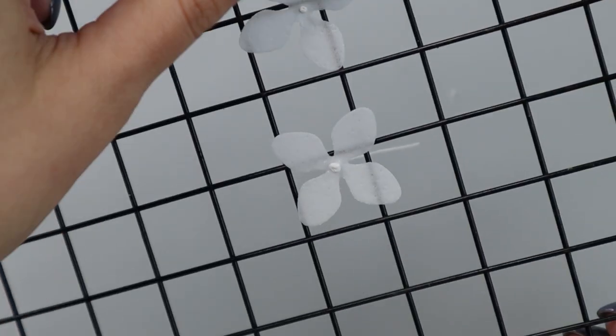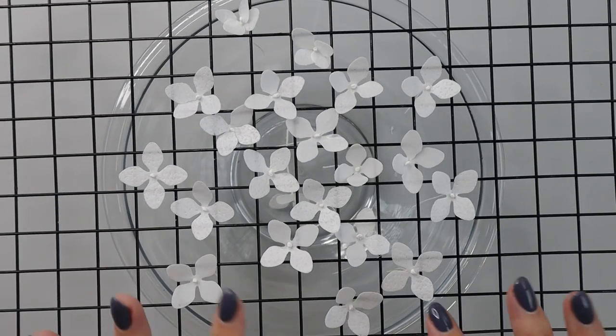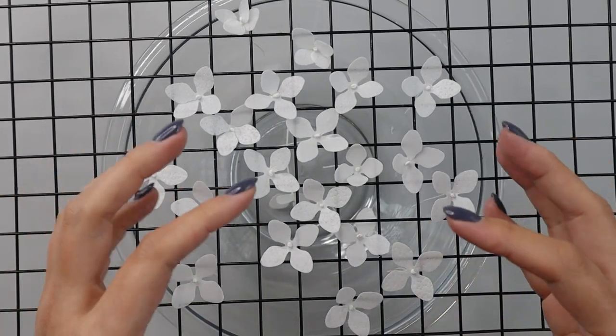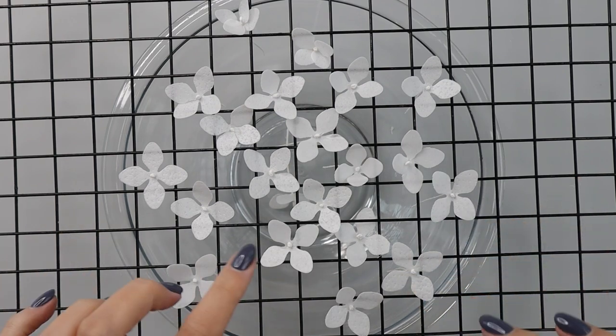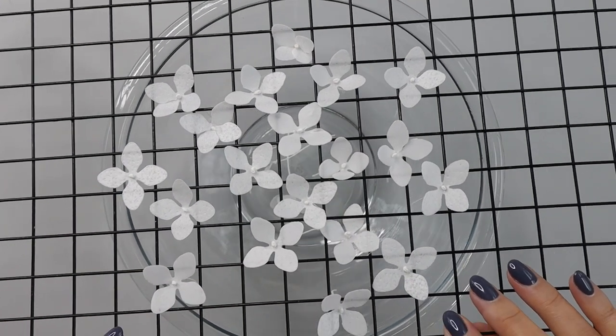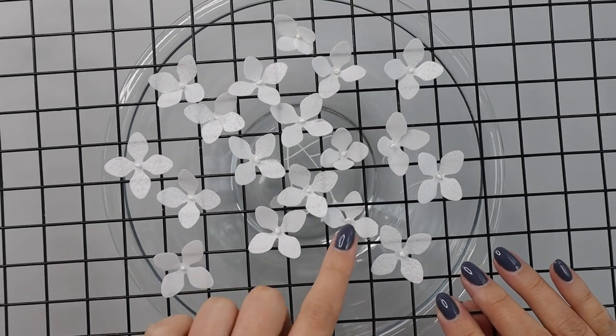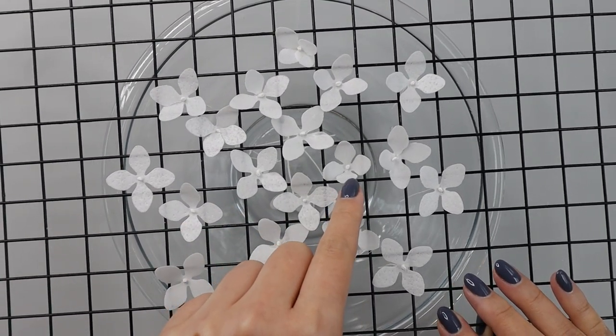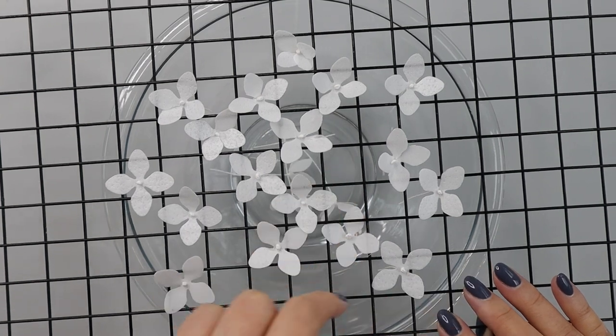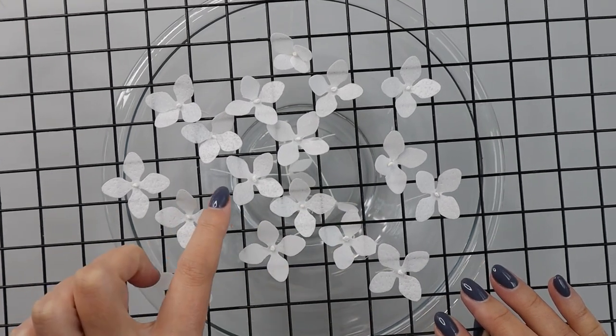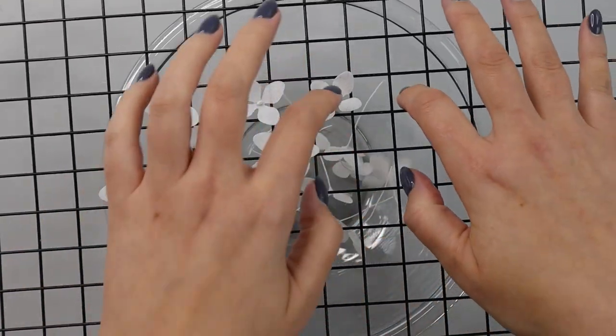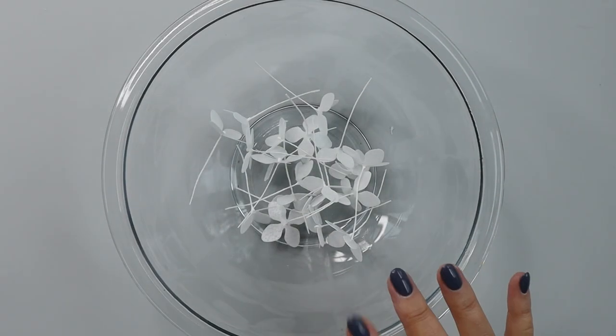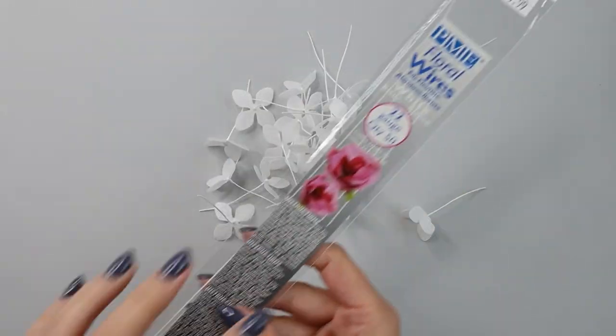You can see they can dry very dimensional and open. Now that I have all my flowers ready, for each hydrangea head you would need about 20 to 30 flowers. You can see they became a little bit more dimensional because some of these flowers sunk onto the wire rack. Some of those flowers are more open, so I'm going to collect all of them and assemble my hydrangea flower.